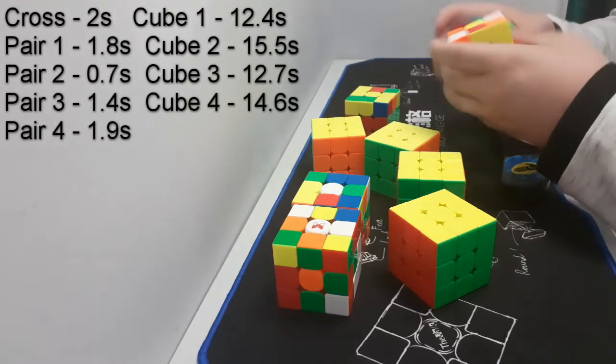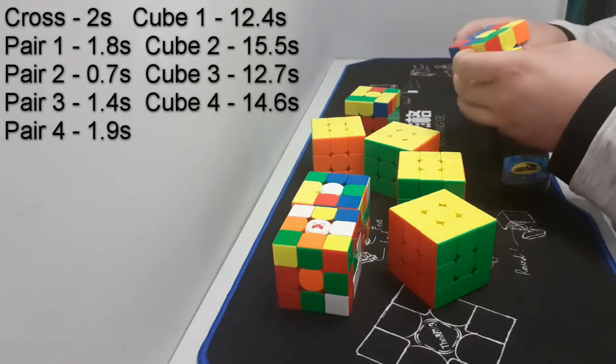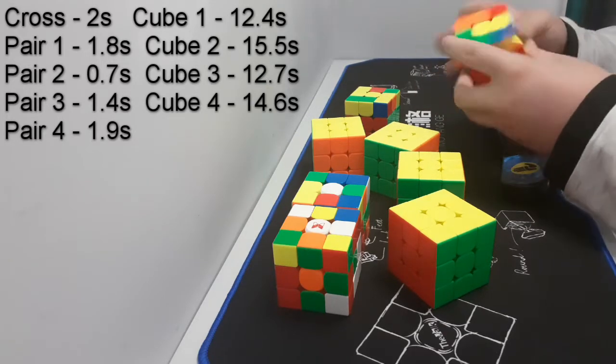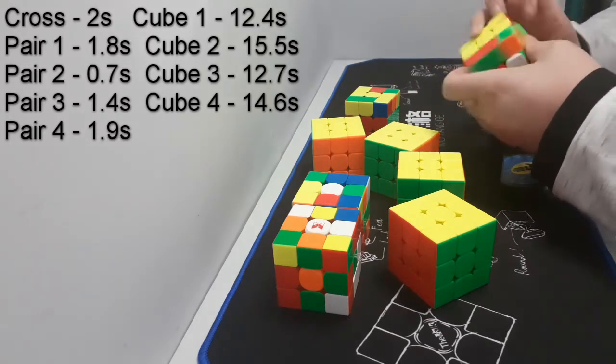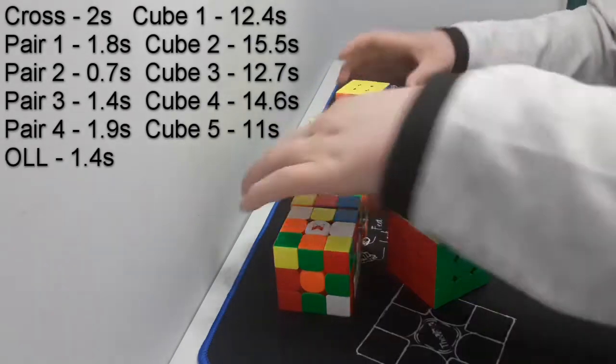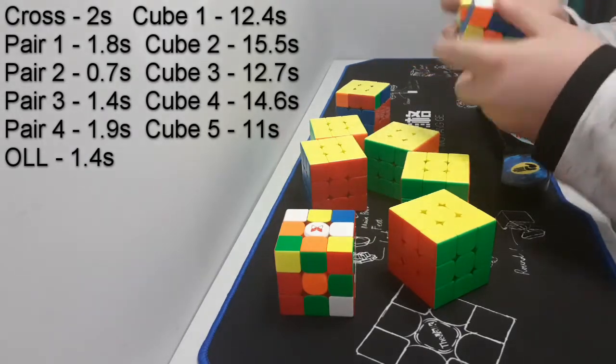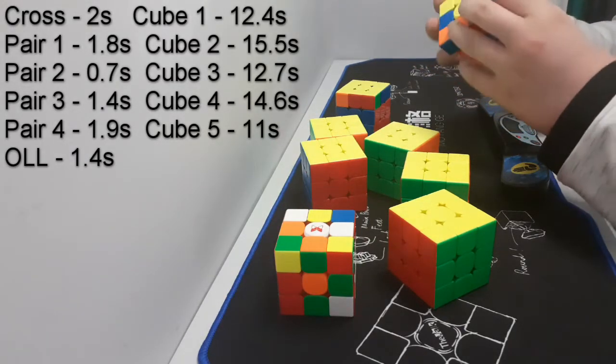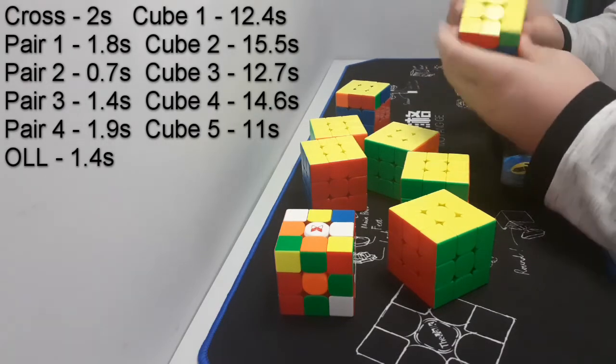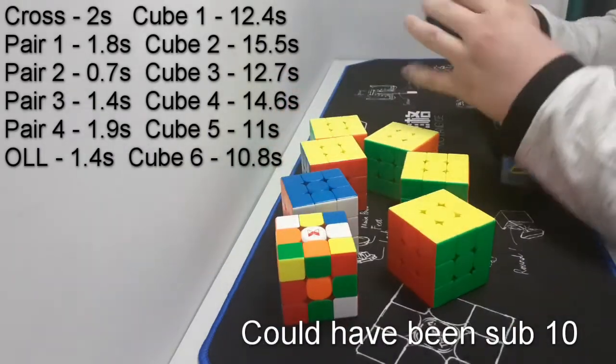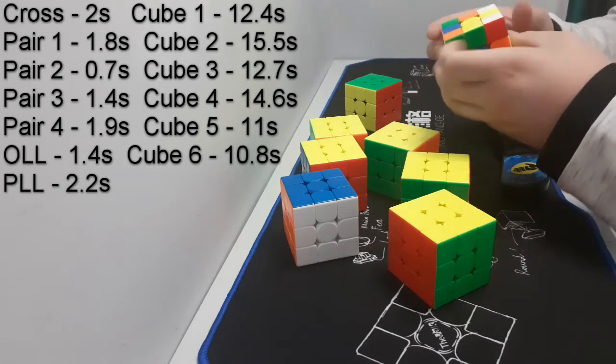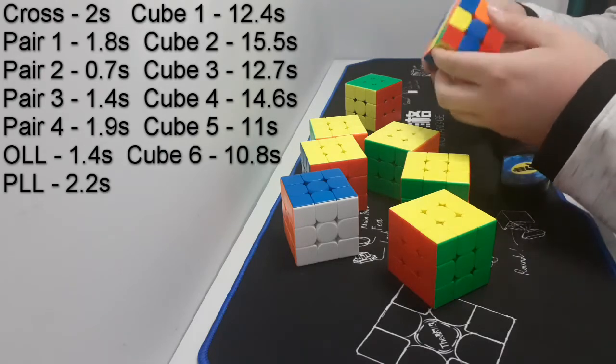Okay, that's a decent OLL, three free pairs, whoa. That's a bad cube. End perm, my favourite PLL, what a great one to end on. I messed up the cross, well.